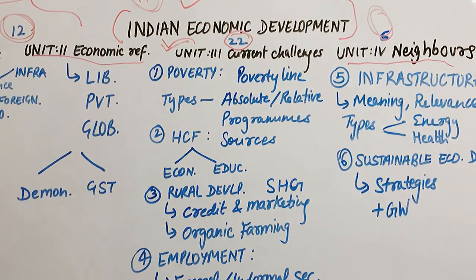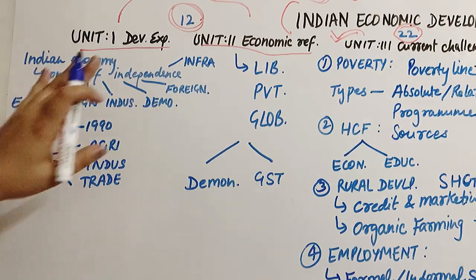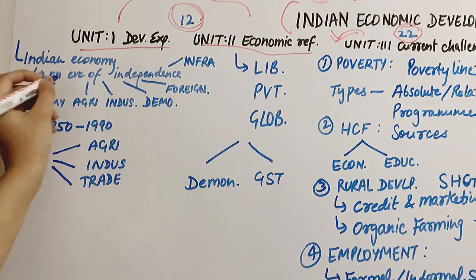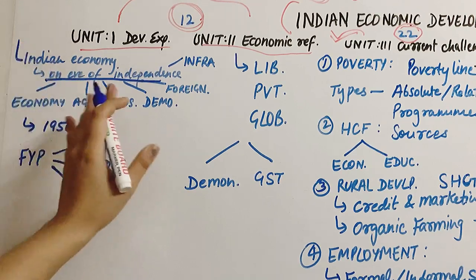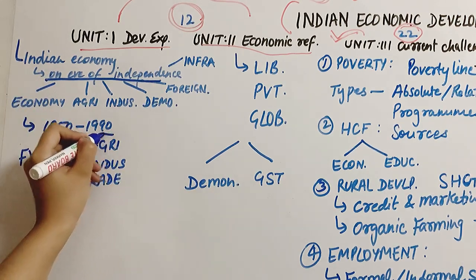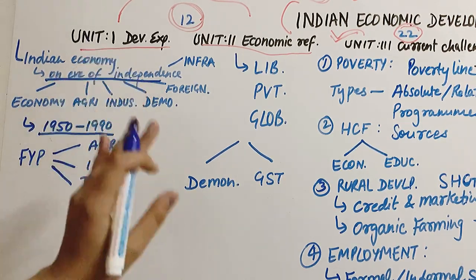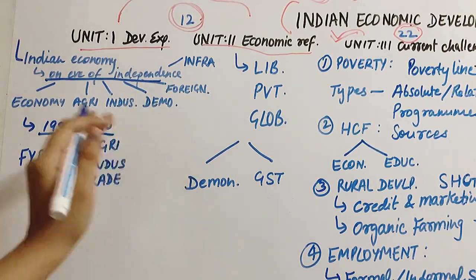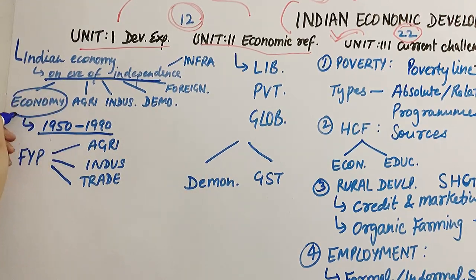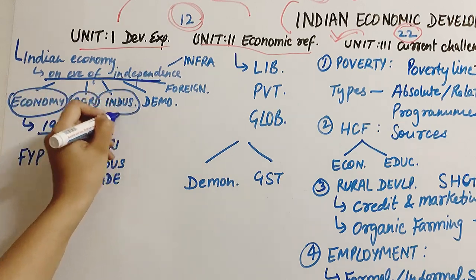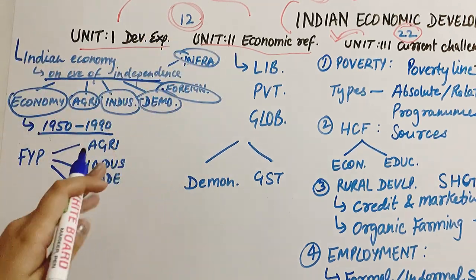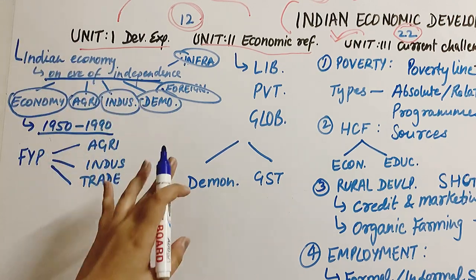For Unit 1, it is divided into 2 chapters. The first is Indian Economy on the Eve of Independence — basically what was the condition at independence. Important sub-topics include economic, agriculture, industries, demographic structure, foreign policies and infrastructure. We need to learn all of these and remember the statistics.